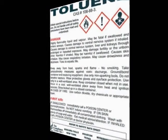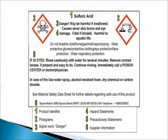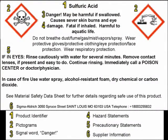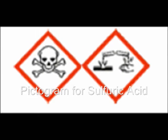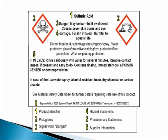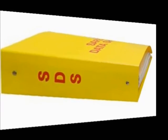Here is a complete label example with all the label elements. Here is the GHS label example for sulfuric acid. One: identity — sulfuric acid. Two: pictogram — the skull and crossbones symbol represents acute toxicity, and the corrosion symbol for corrosive chemical. Three: signal word is 'Danger' for sulfuric acid. Hazard statements: 'May be harmful if swallowed. Causes severe skin burns and eye damage. Fatal if inhaled. Harmful to aquatic life.' Precautionary statements: 'Do not breathe dust, fumes, gas, mist, vapors, or sprays. Wear protective gloves, protective clothing, eye protection, face protection. Wear respiratory protection. If in eyes, rinse cautiously with water for several minutes.'